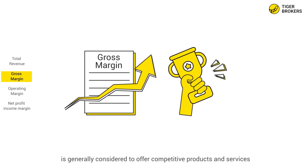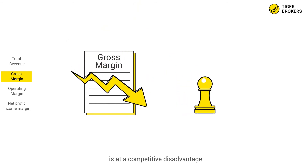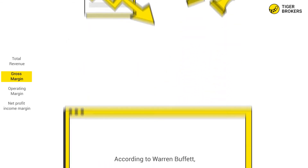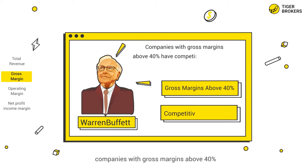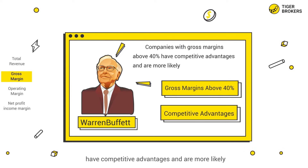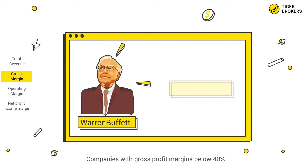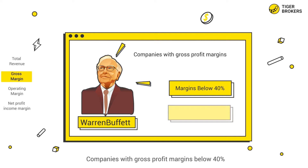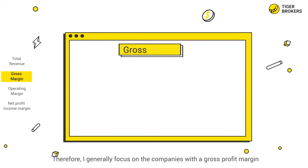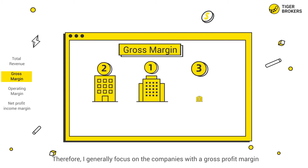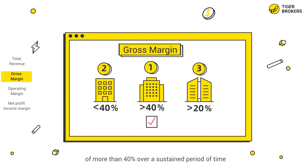A company with high gross margin is generally considered to offer competitive products and services, while a low gross margin shows a company is at a competitive disadvantage. According to Warren Buffett, companies with gross margins above 40 percent have competitive advantages and are more likely to be in a sustainable leading position in the industry. Companies with gross profit margins below 40 percent generally face stiff competition, so I generally focus on companies with a gross profit margin of more than 40 percent over a sustained period of time.